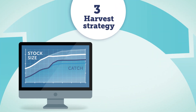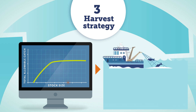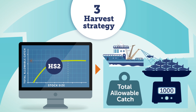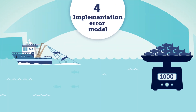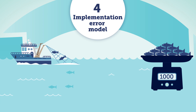Then, the data coming out of the observation error model are interpreted to assess the population status and determine the management response based on the harvest strategy being tested.